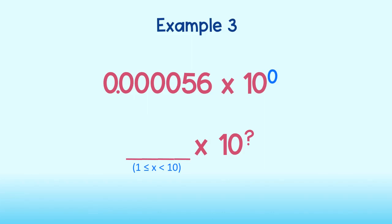This time, to get a number between 1 and 10, we will have to start moving the decimal point to the right. This is the same as multiplying by 10. Since the number is getting larger by a power of 10, the second factor must get smaller by a power of 10. We can show this by multiplying by a fraction.